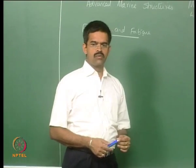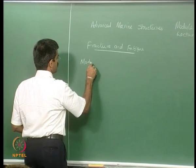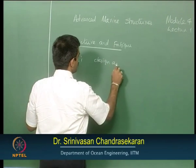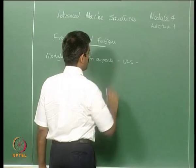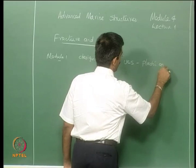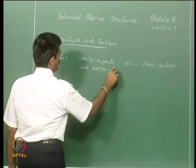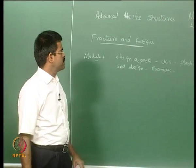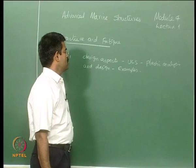Now we will discuss the lectures on the fourth module of the course on urban marine structures. Just for summary, let us quickly see: in module one, we discussed about the design aspects broadly, where we said there are different limit states, ultimate limit states. We also discussed about the plastic analysis and design. We did some examples to understand how to compute the plastic hinge length for a given problem, and we discussed both the lower bound and upper bound theorems to find out the true collapse load for a given structural system.